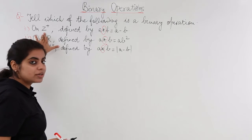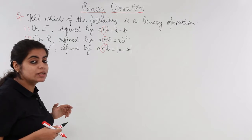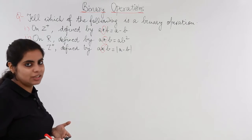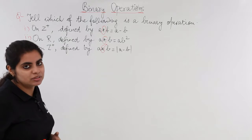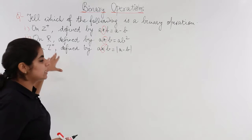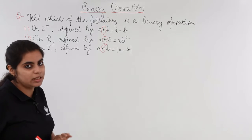So it is given to me in the first point that it is Z positive. What is Z positive? Z positive is the positive integer. In the second, we have R. What is R? R is the real number. In the third, again, it is Z positive. So what do you mean by Z positive? It is the positive integer. This has to be taken in mind.